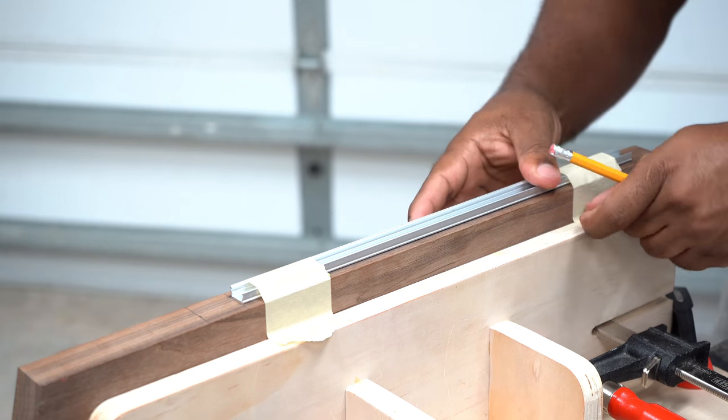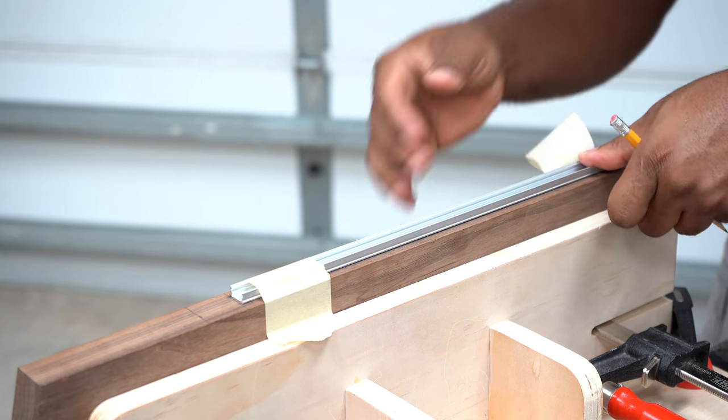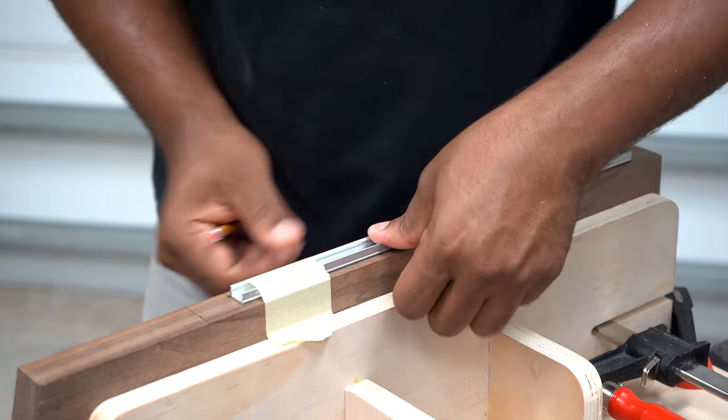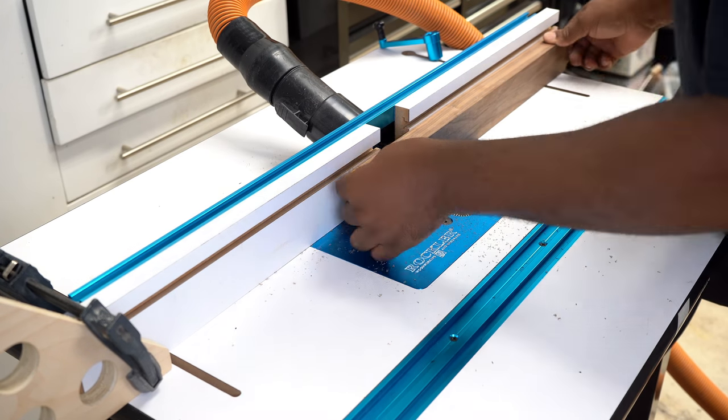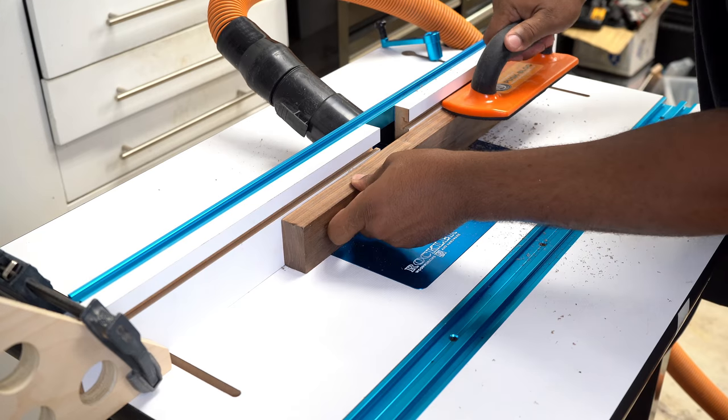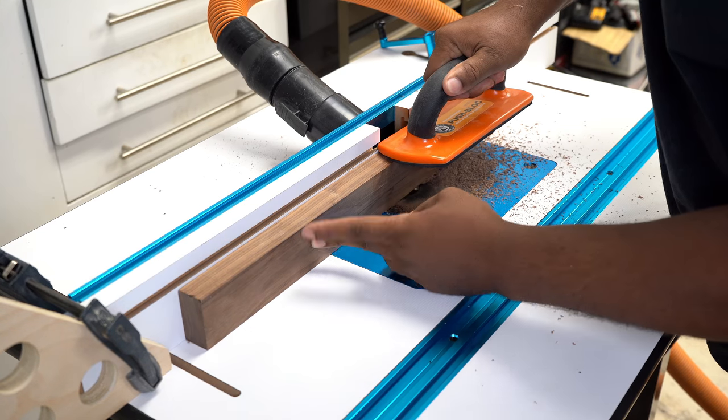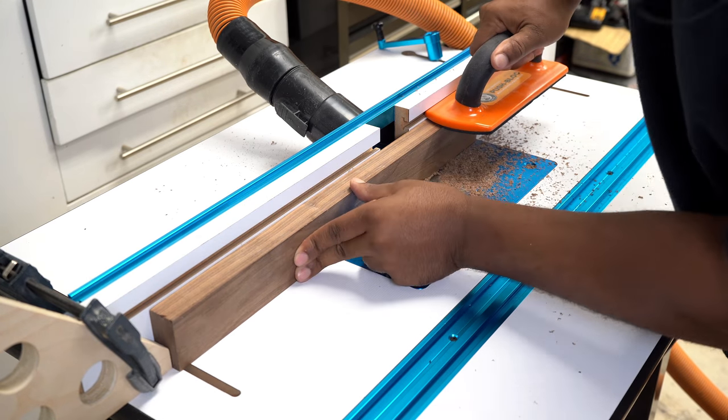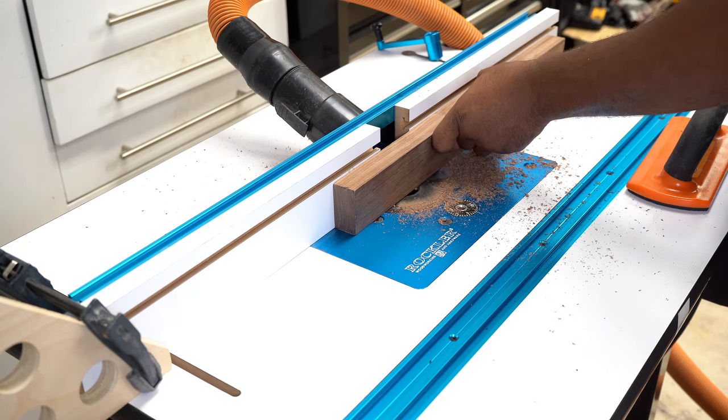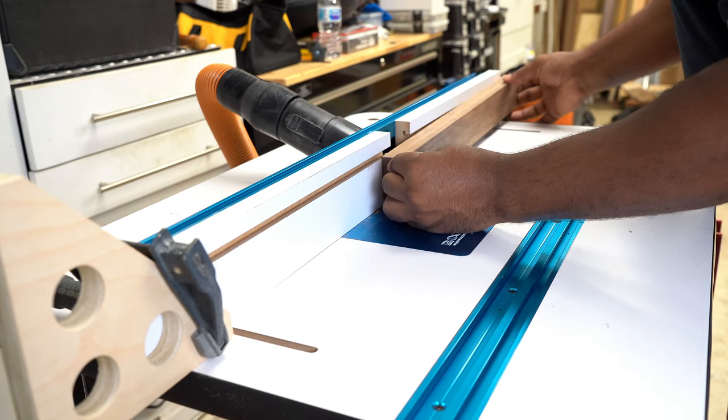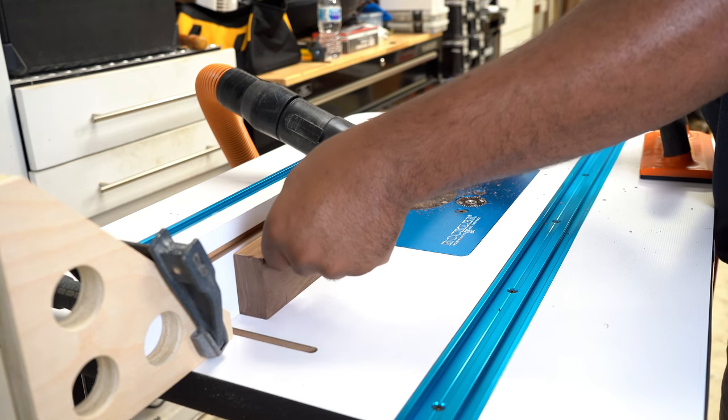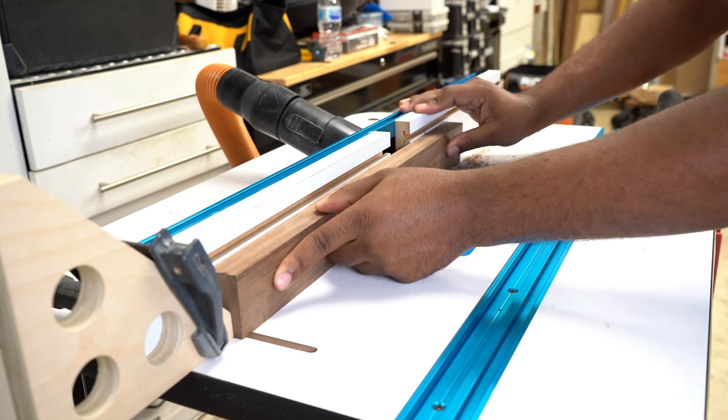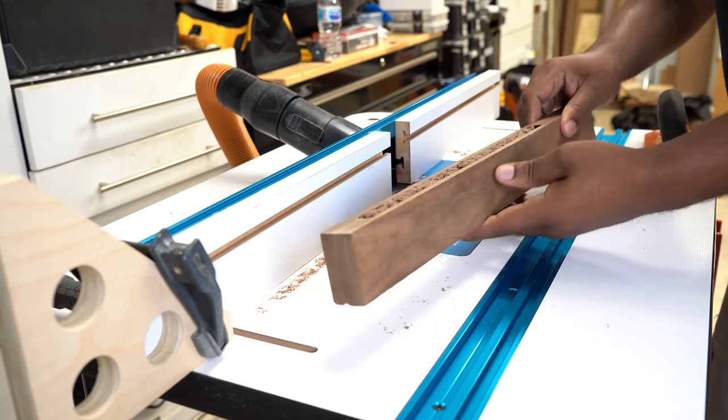After tracing the LED channel onto the lumber, the next stop was over at the router table. Whenever you're doing a project like this, always try a test piece first before committing to your final piece. Now to begin routing, I just push this down on top of the bit, let the bit cut into the wood, and then ride it down the side of the fence until it hits the stop. The router bit I use is slightly narrower than the LED track.